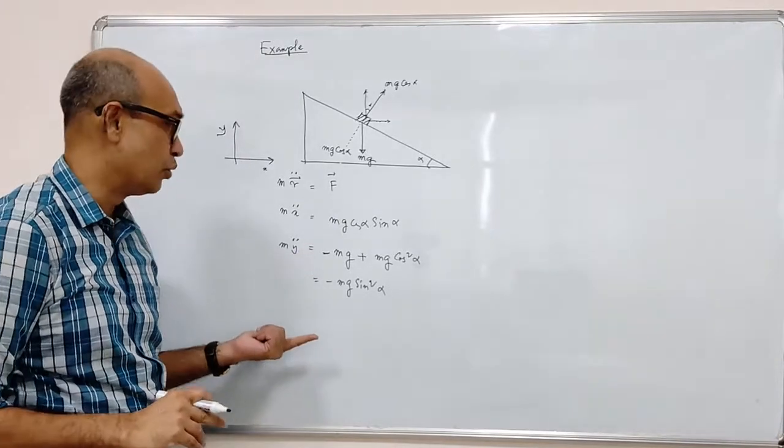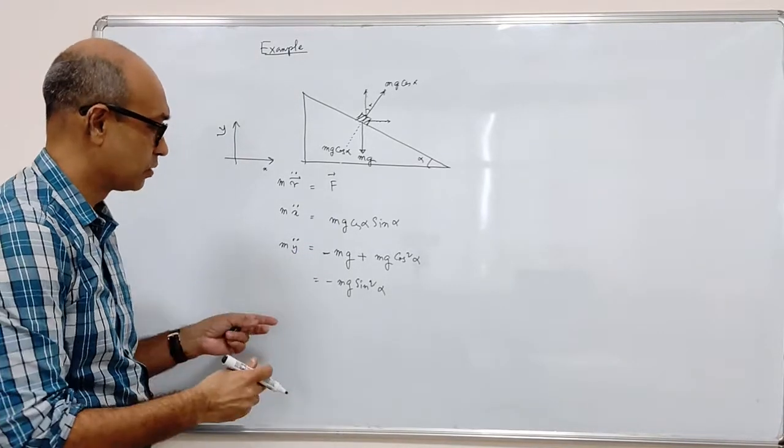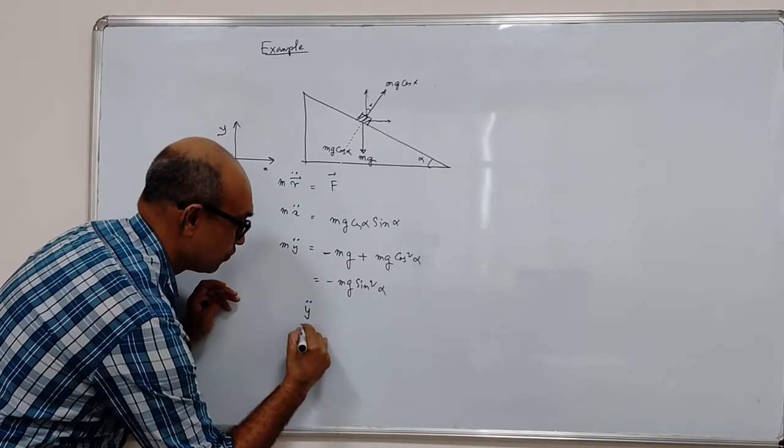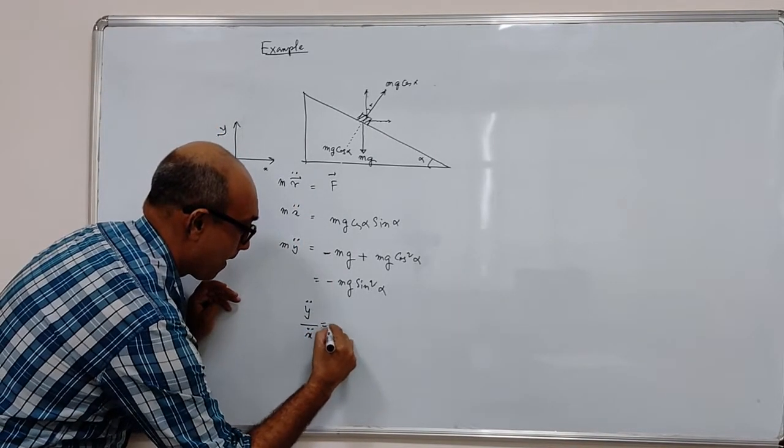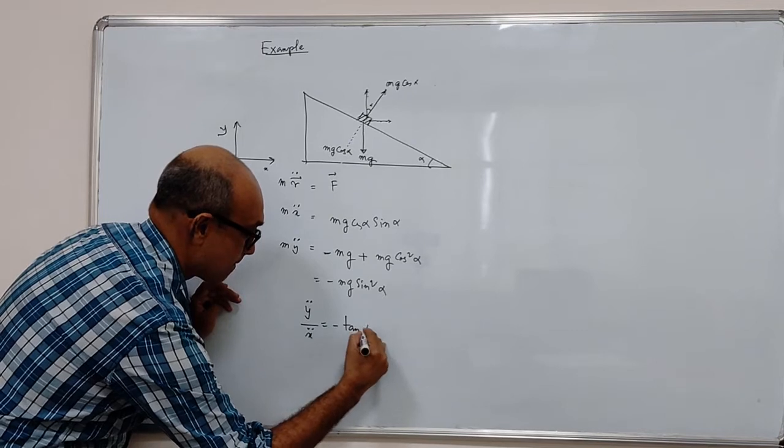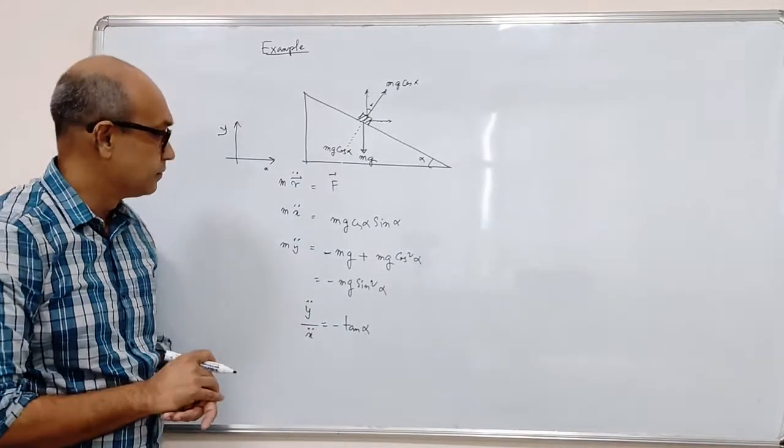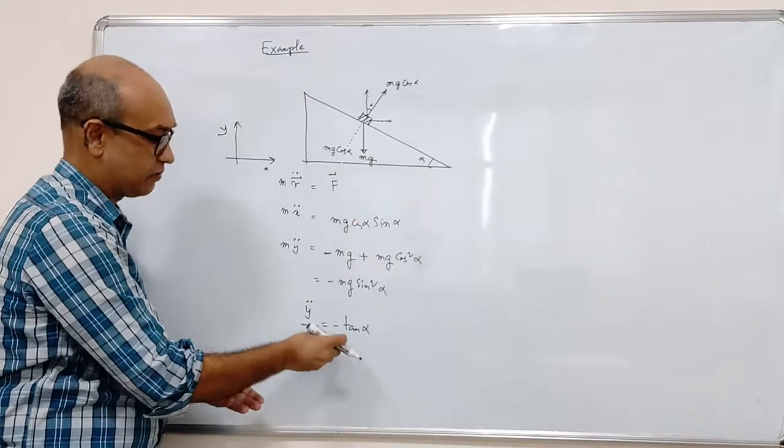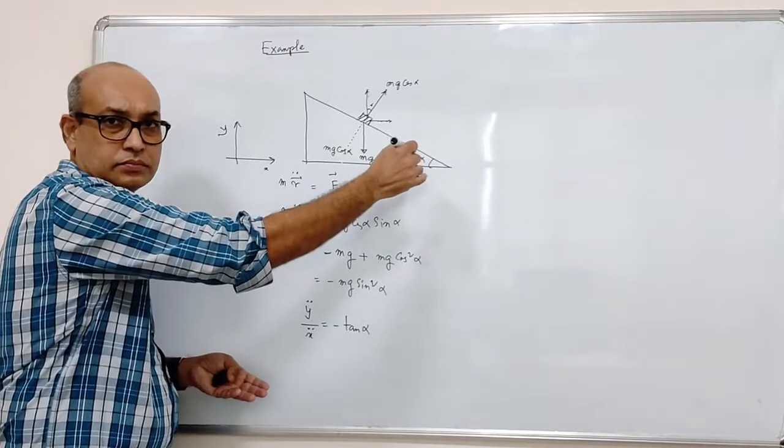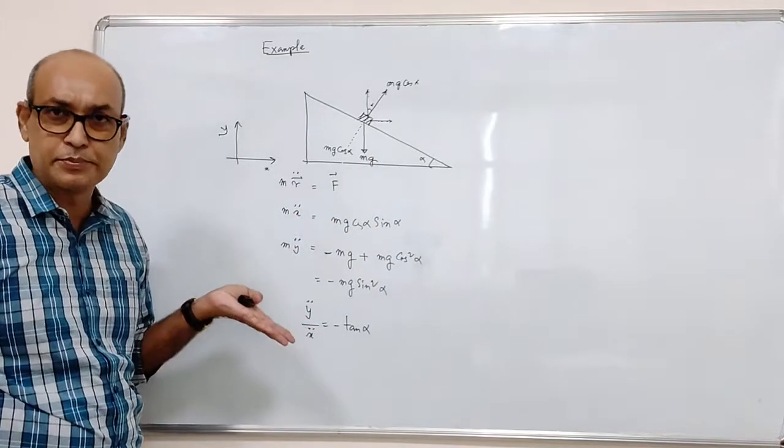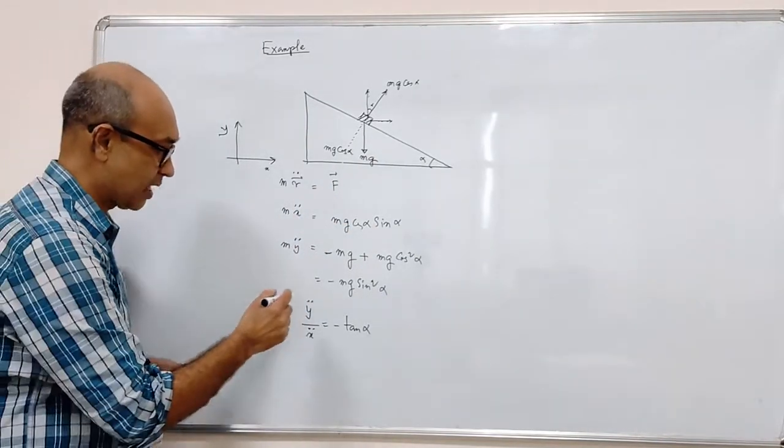Is this correct? Can we do a quick check? Sure. Just take the ratio of these equations. And that will give you the direction of acceleration is tan alpha. The negative sign says that it is going down. As x increases, y decreases. This is precisely what we expect.